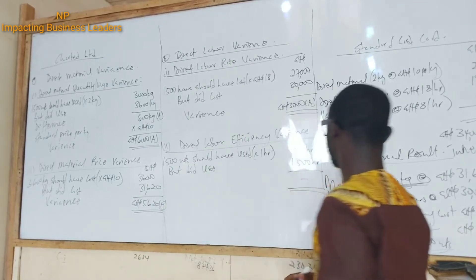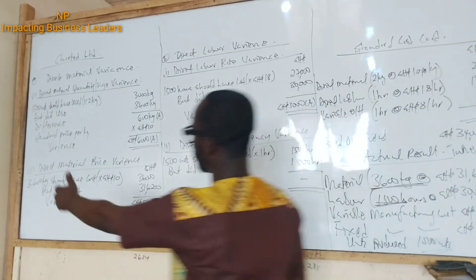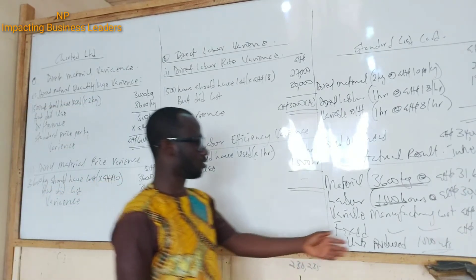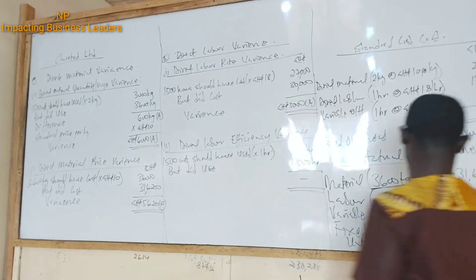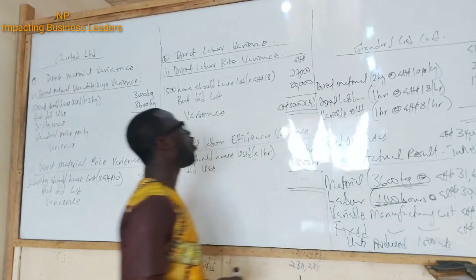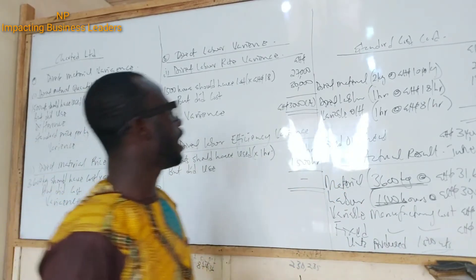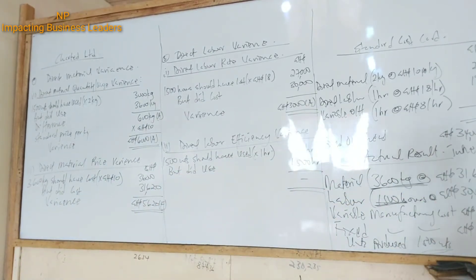Where did you get 1,500 units? It's given — that's what we've been using: 1,500 units. It was given in the question. So these are the first four variances. You can put those down and then let's look at the overhead aspect.